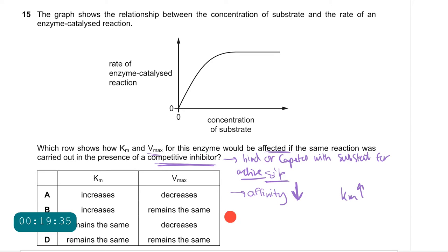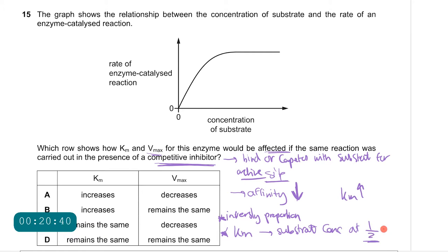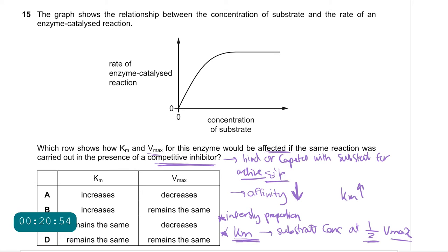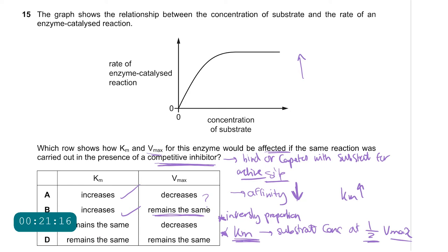Km is the substrate concentration at half Vmax and is a measure of affinity — as Km increases, affinity decreases. Vmax is the maximum rate of reaction and remains the same with a competitive inhibitor, because if you increase substrate concentration sufficiently, the effect of the competitive inhibitor decreases and the rate can reach the normal Vmax. Therefore the answer is B.